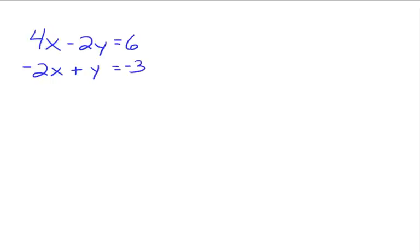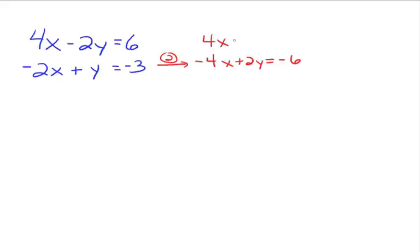Let's try an example. We have 4x minus 2y equals 6, and 2x plus y equals negative 3. To solve by the elimination method, multiply the bottom equation by negative 2, giving us negative 4x plus 2y equals negative 6. Leave the top equation the same: 4x minus 2y equals 6. When you add them all up, you get 0 equals 0, which is a true statement — so we have a dependent system with an infinite number of solutions.